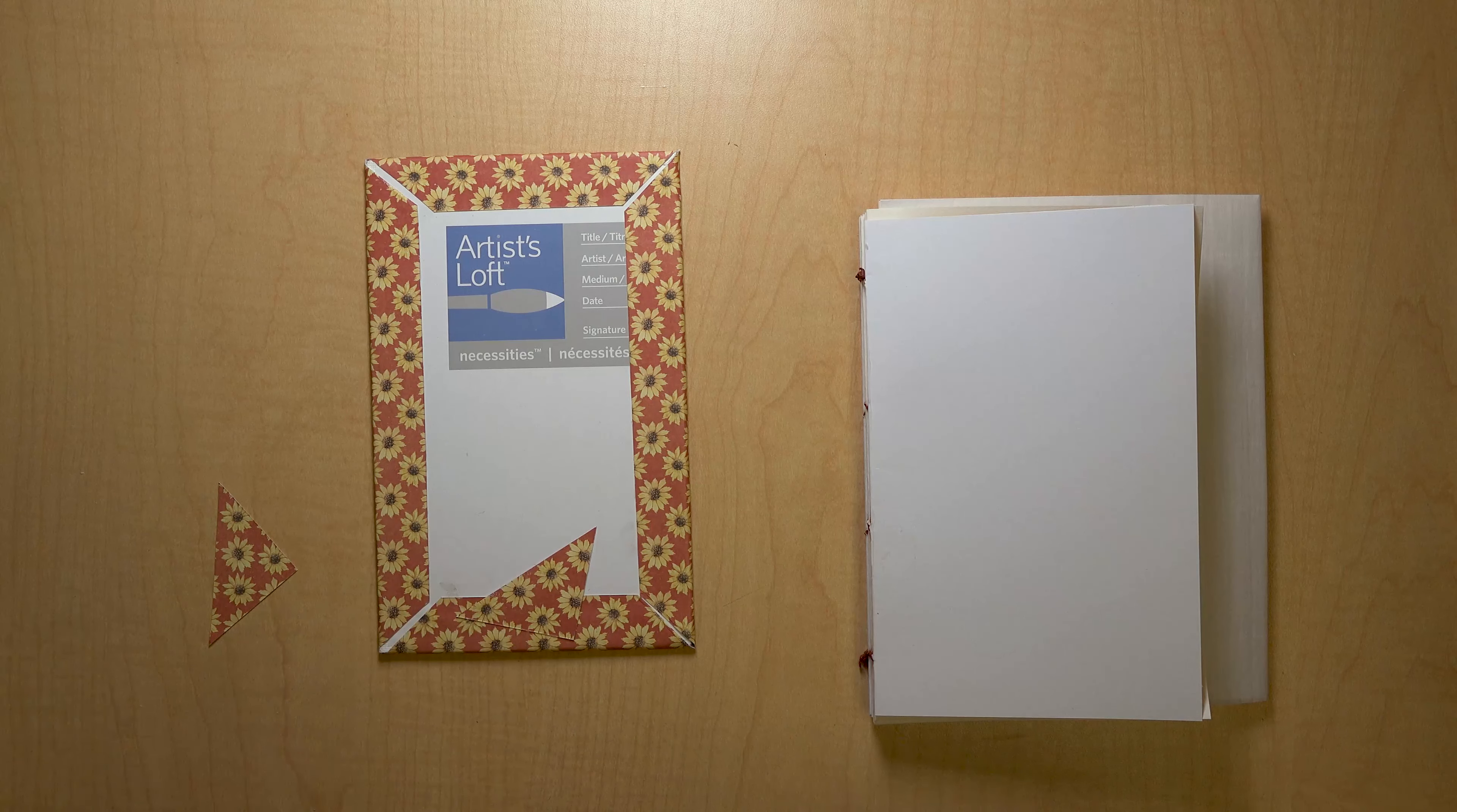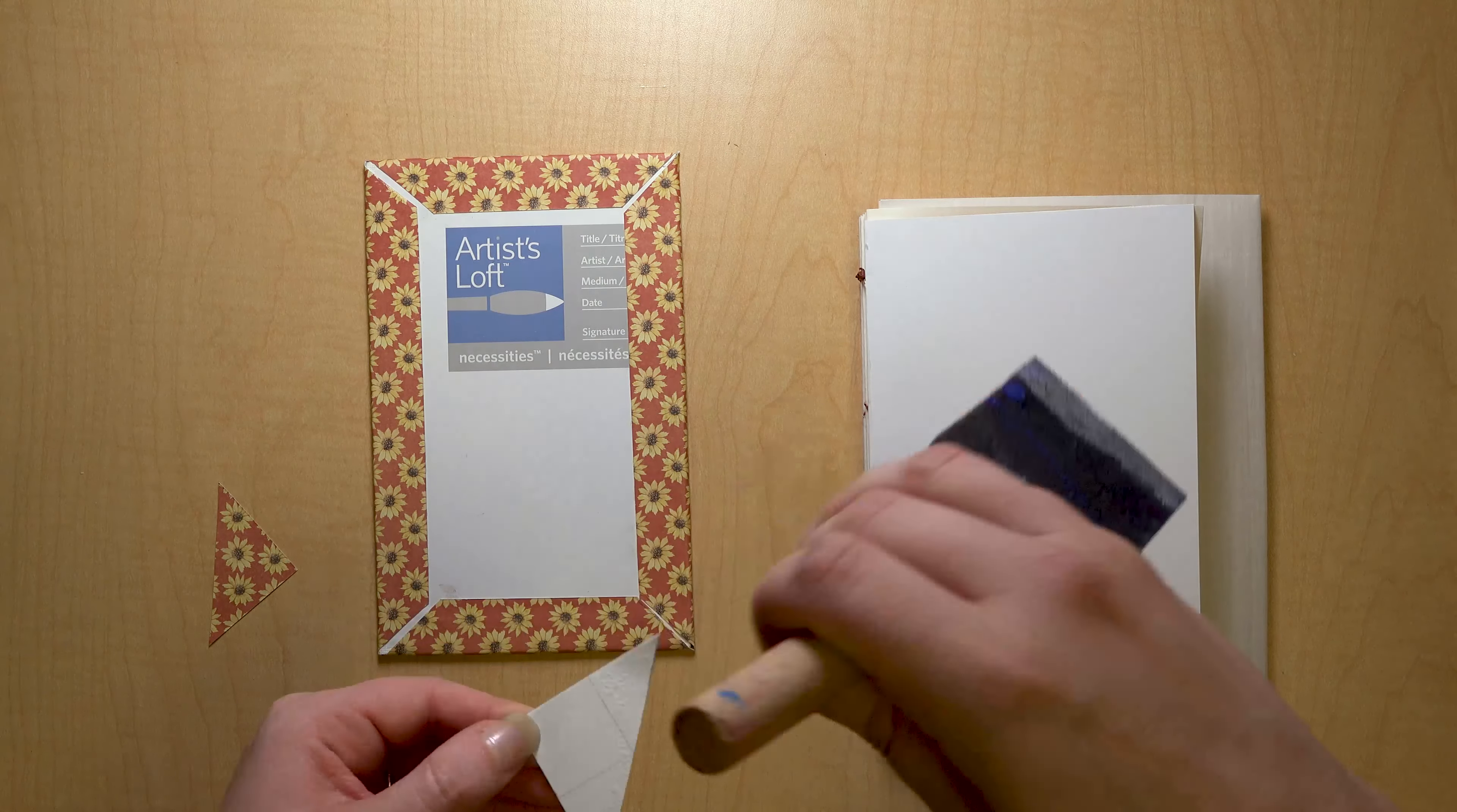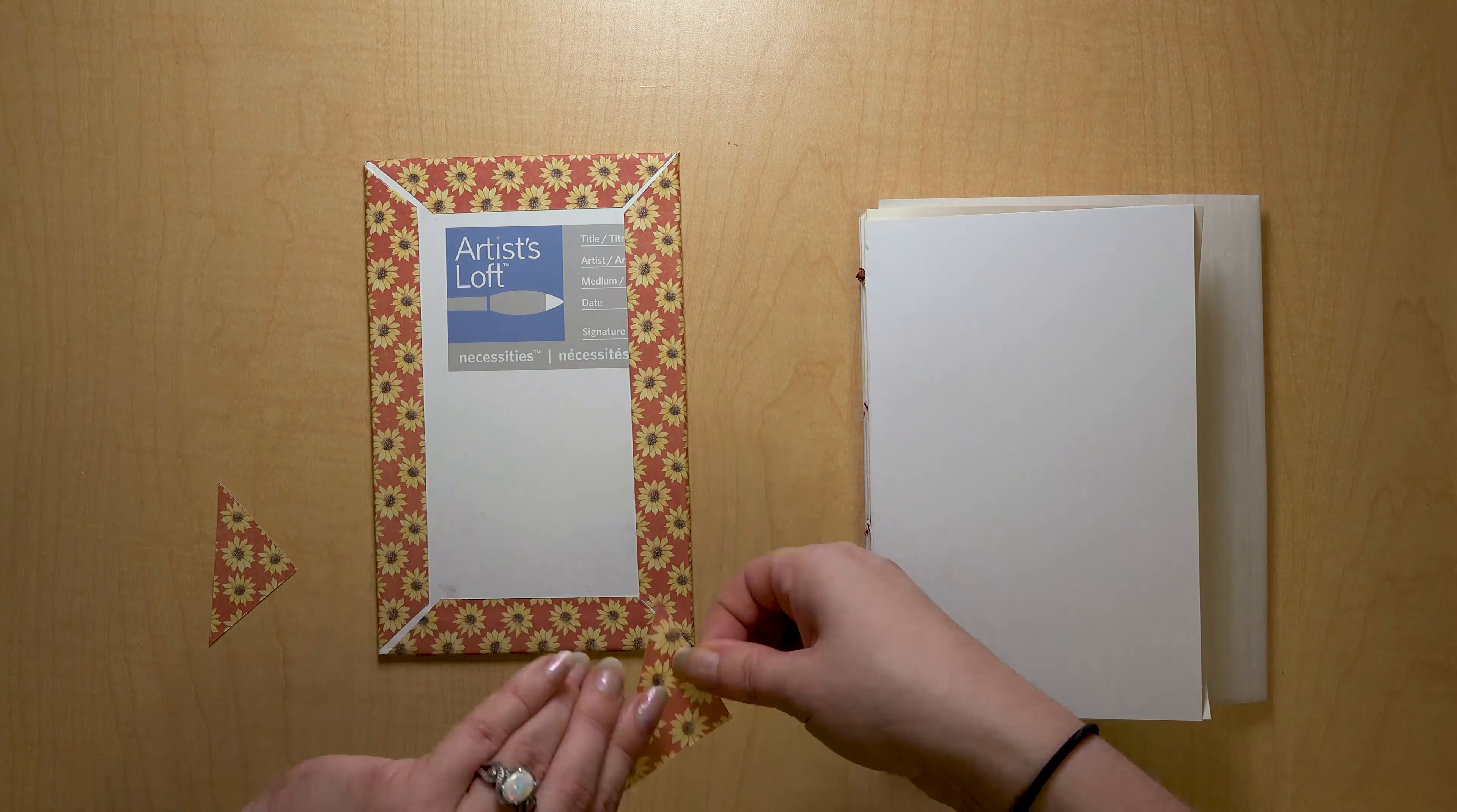Give that a little bit to dry. If you want, you can take some of the triangular pieces you cut out earlier and glue them in the corners of the front and back interior covers. This way you can cover up any gaps you might have.